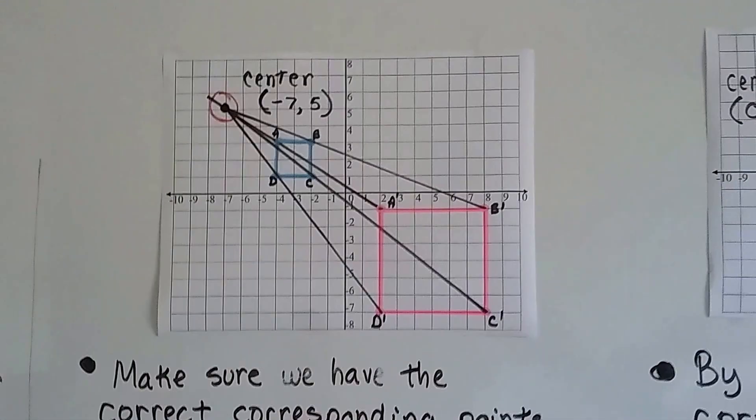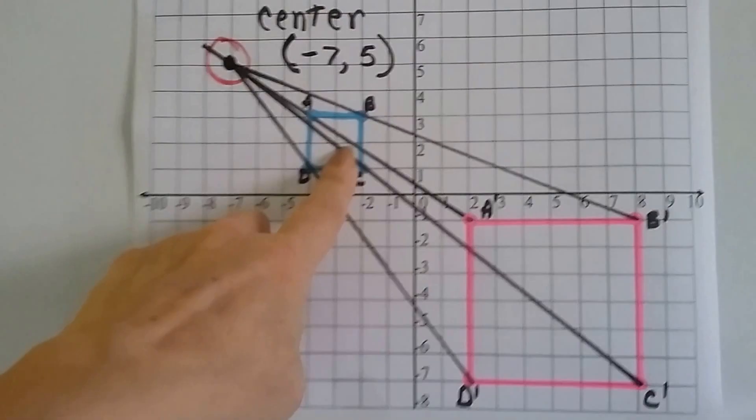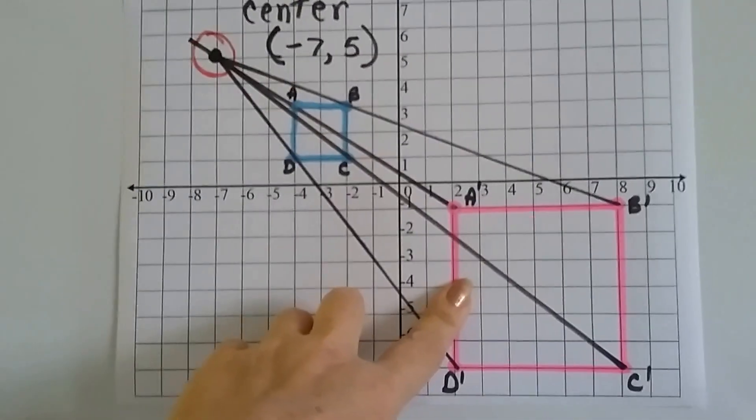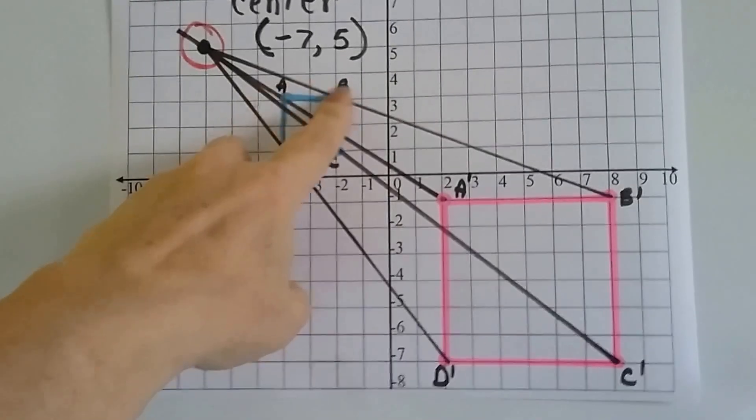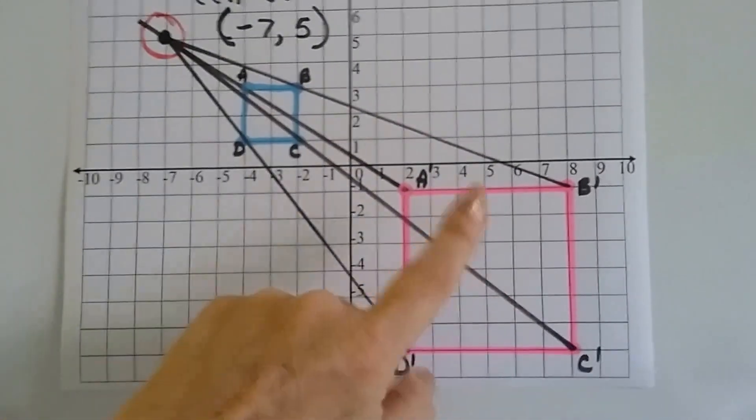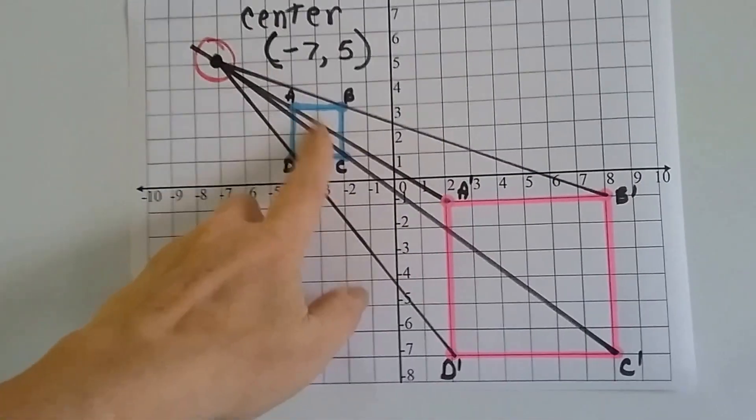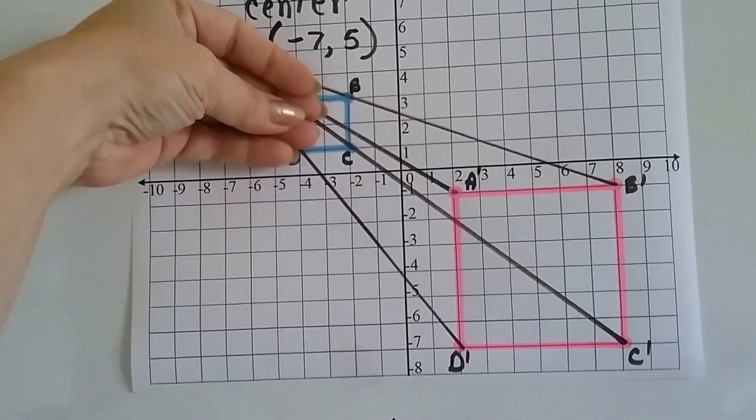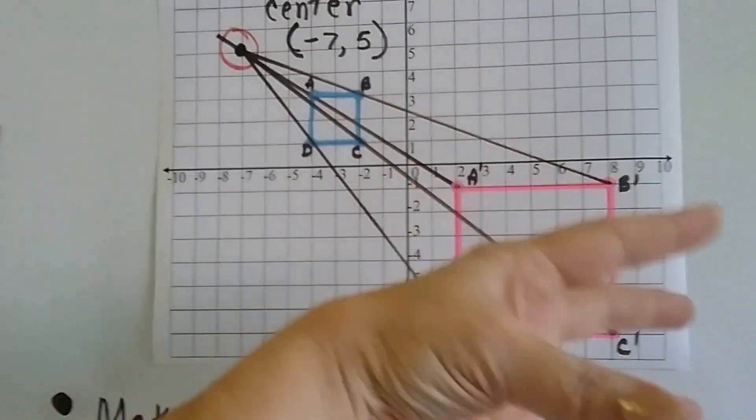Let's take a look at this coordinate plane. We can look at this blue square and this pink square. The blue one has no tick marks, and the pink has tick marks, so the pink is the copy, the image. The blue is the original pre-image. We can see that it got bigger, it went through an enlargement.